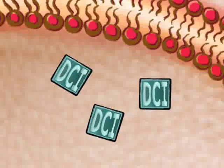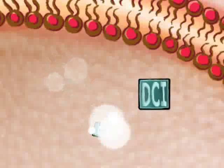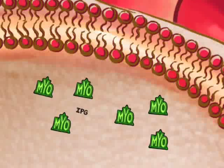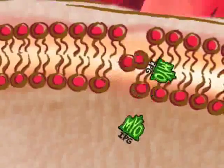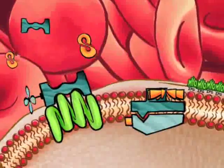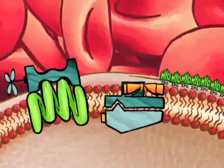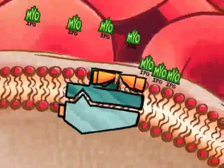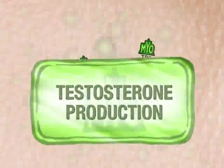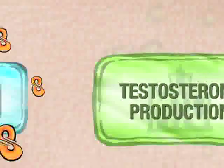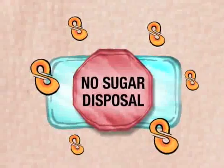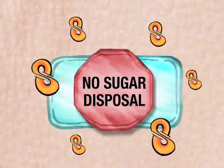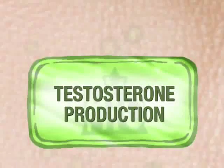But let's imagine what might happen if DCI weren't present. Without DCI, we can't make DCI-IPG. That only leaves MYO-IPG for the insulin response, which causes a hormonal imbalance. MYO-IPG tells the theca cells to make testosterone, while DCI-IPG would normally tell all of the cells to dispose of glucose. No glucose disposal means chronically high insulin, and this means the theca cells are always making testosterone.